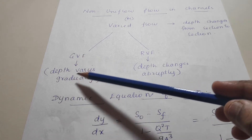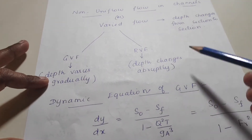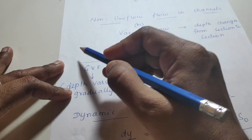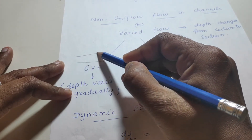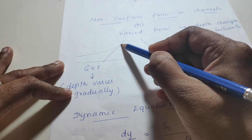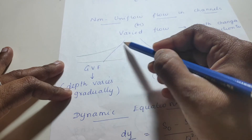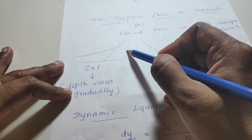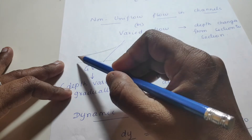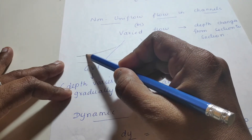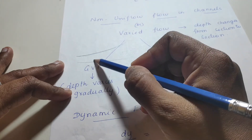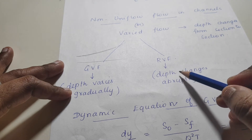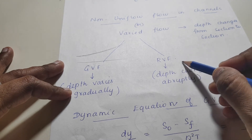In gradually varied flow, the depth of flow increases gradually along a channel section. This occurs when there is some obstruction, causing the water to rise gradually. This gradual change in depth characterizes GVF.